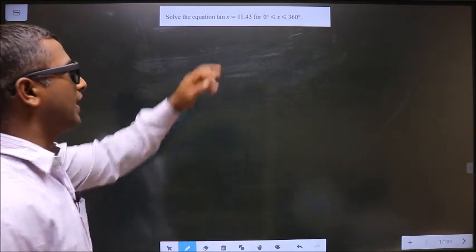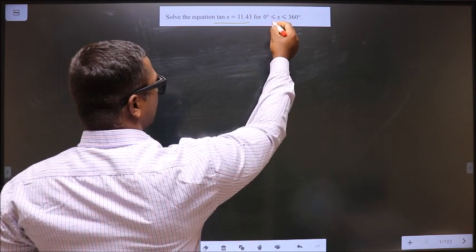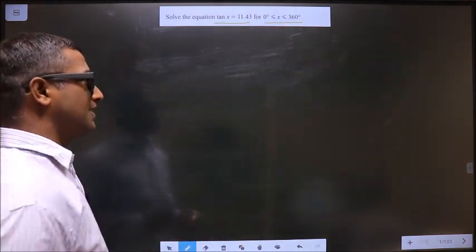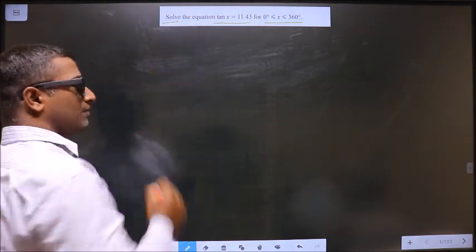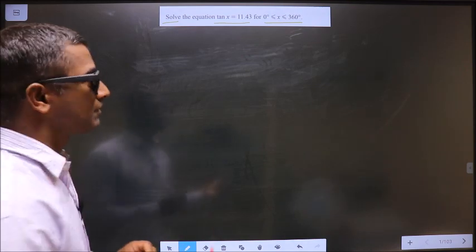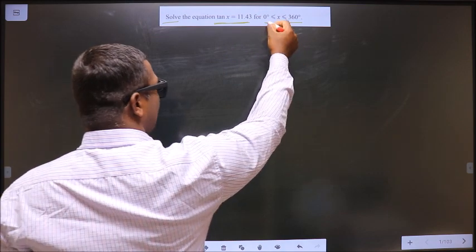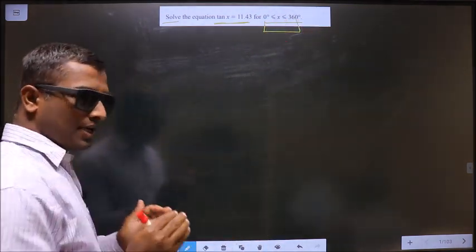Solve the equation tan x equal to 11.43 for x lies between 0 to 360 degrees. You need to find the values for x satisfying this equation and lying in this interval.